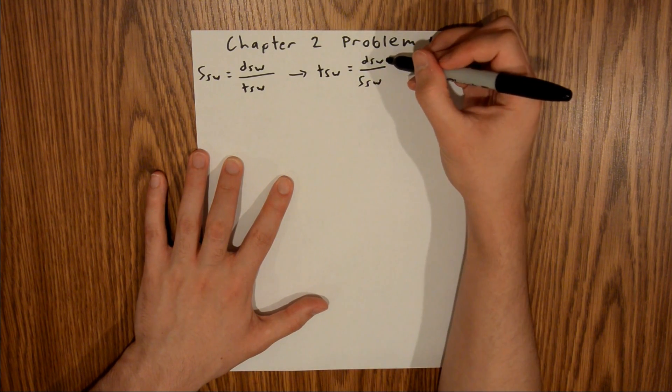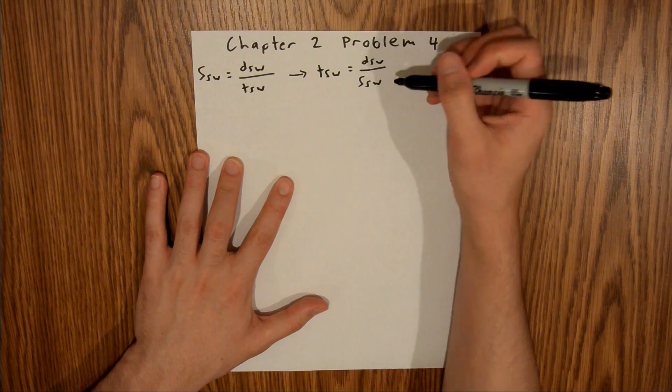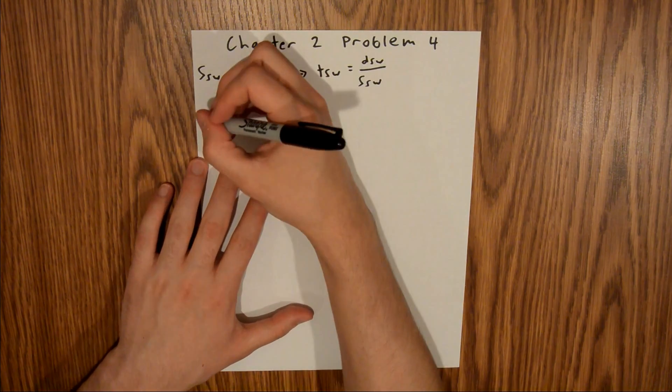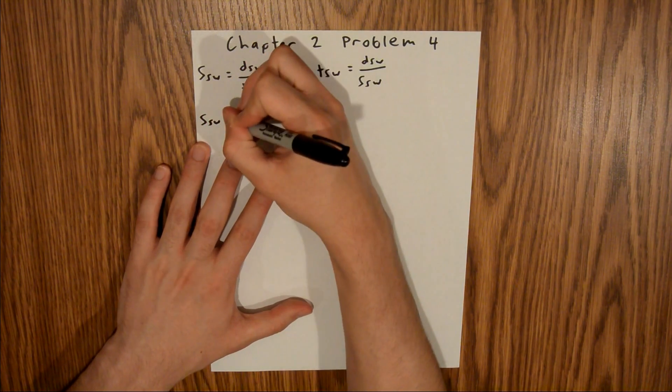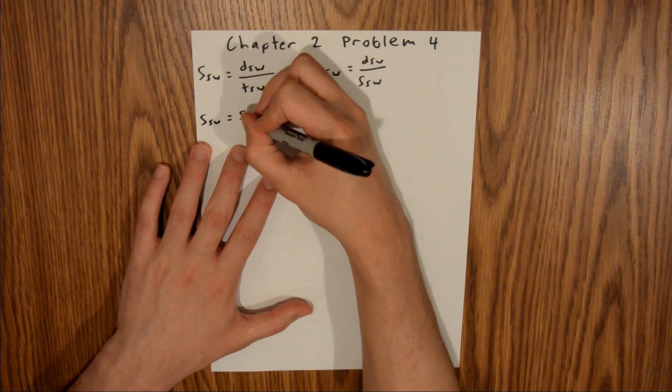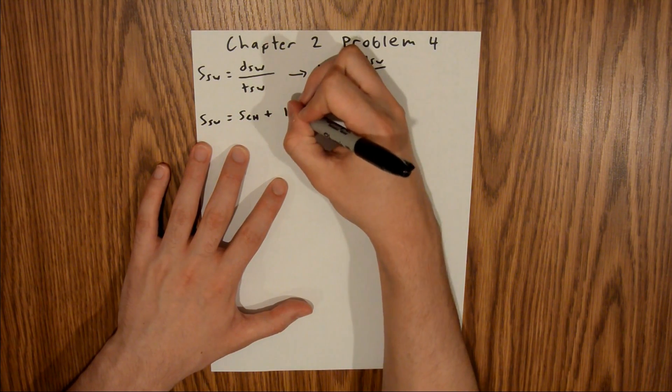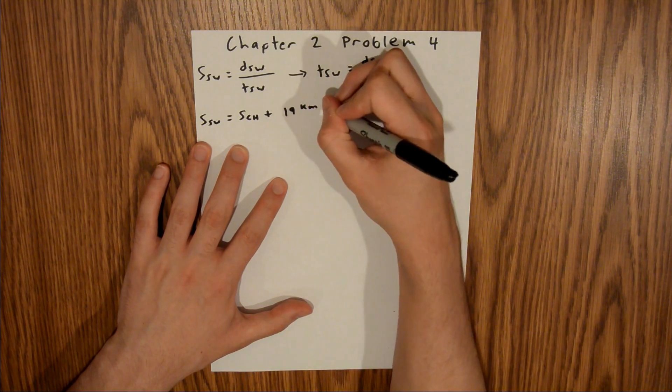The distance we are given in the problem, but we are not given the speed. What we are told is that the speed of SW is equal to the speed of CH plus 19 kilometers an hour.